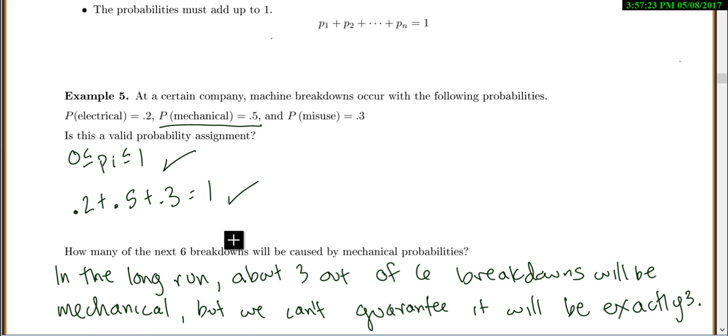How many of the next six breakdowns will be caused by mechanical problems? Well mechanical is 0.5, so that means like half of them. So half of six would be three. Now it's not going to be exactly three. We can't guarantee exactly three. But in the long run, about three out of every six breakdowns will be mechanical, because the probability of mechanical is 0.5.